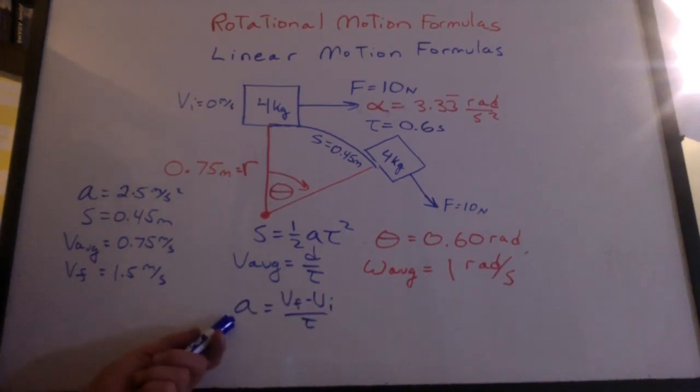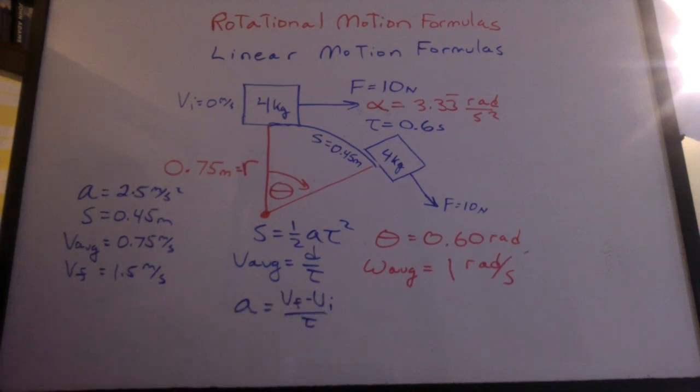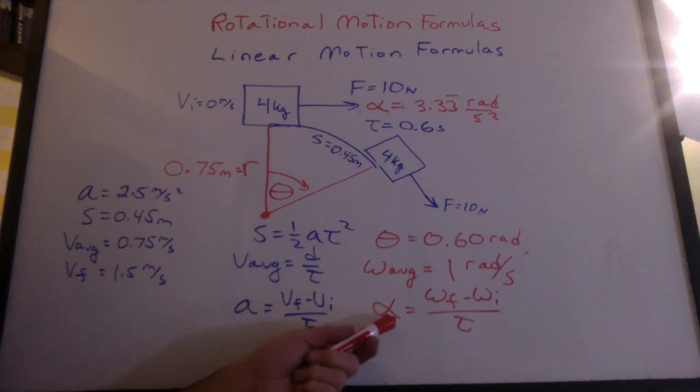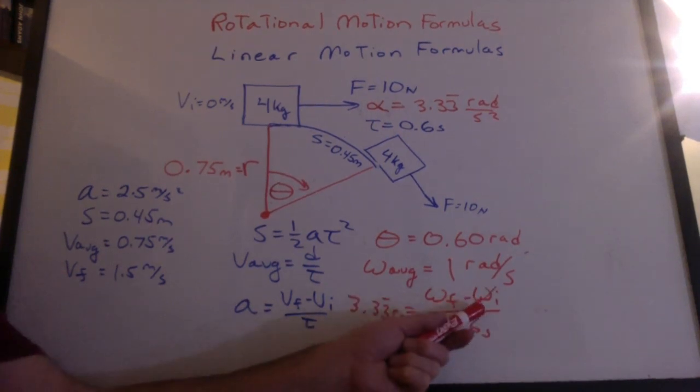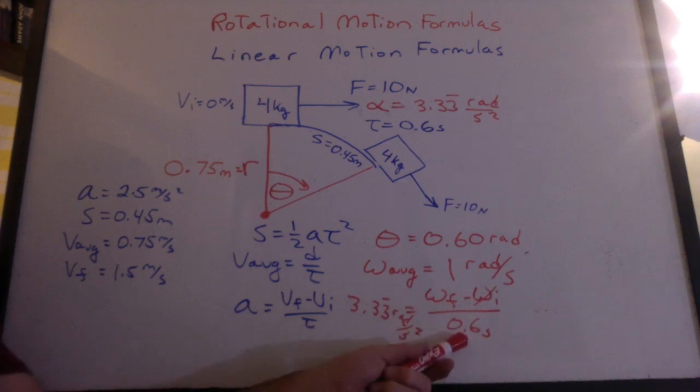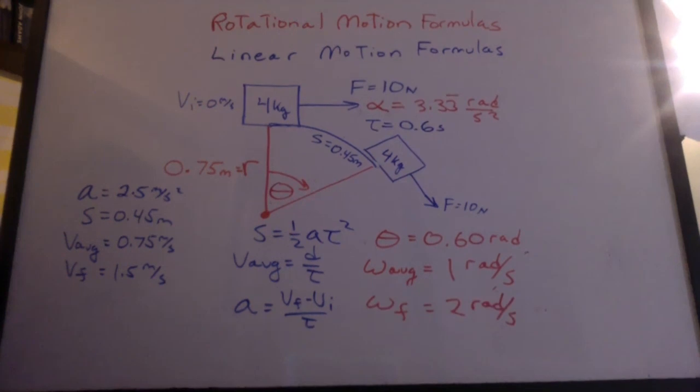Well, just like we said acceleration is v final minus v initial over t, so we could solve for v final, we could use the same corresponding rotational formula. The initial angular velocity is 0. The time it took was 0.6 seconds, and we were accelerating at this rate. Well, that gives us a final angular velocity of 2 radians per second.